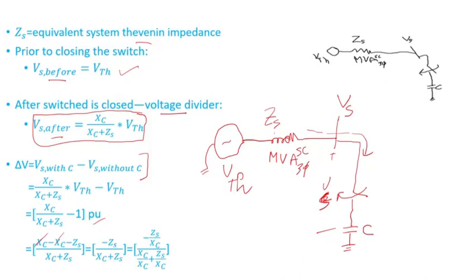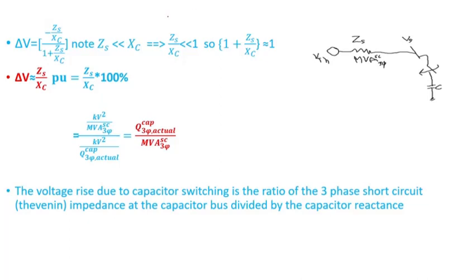If we divide both the numerator and denominator by XC, we get this value — this is the more general equation. Note that ZS, the Thevenin impedance, will typically be much smaller than the capacitor impedance XC.